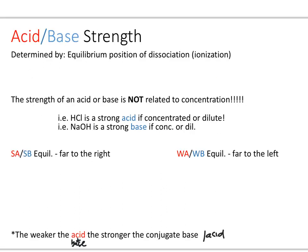Let's talk about acid and base strength. Acid and base strength is determined by the position of the equilibrium for the dissociation of a specific acid or base. Basically, the ionization process that your acid or base is going to go through — the degree to which it goes to the right — is going to dictate the strength of your acid or base.